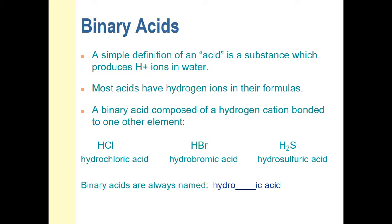This is most important for binary acids, where you have just hydrogen and one other element. To be binary, just like everything else, you have to have just two elements — one of them is hydrogen, usually at the beginning of the formula, and the other is a simple ion. Look on page six of your data booklet: the halogens are all minus one, sulfide is two minus, arsenide is three minus, selenide is two minus. If you give those anions enough hydrogens to make them neutral, you've created binary acids.